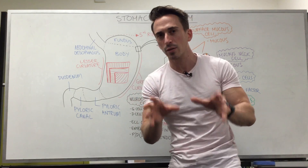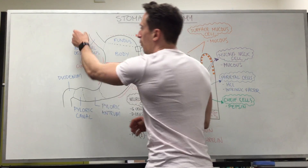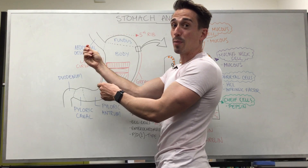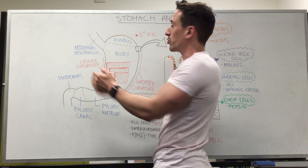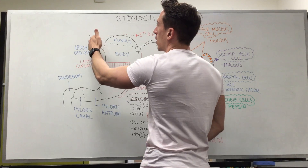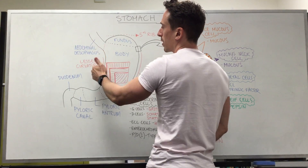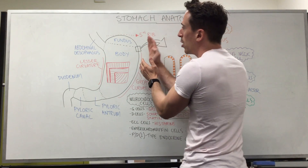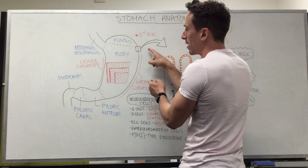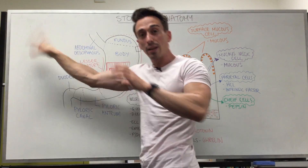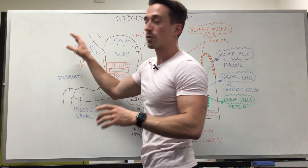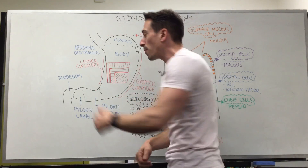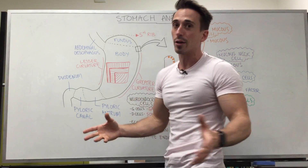Looking at the blood vessels that supply the stomach — the abdominal aorta has a branch called the celiac trunk. The celiac trunk has several branches: the left gastric artery supplies the lowest part of the esophagus and the superior portion of the lesser curvature. The splenic artery branches off behind the stomach, feeding the spleen as well as the fundus and superior portion of the greater curvature. The hepatic artery feeds the liver on that side, supplies the lesser curvature, and has another branch that feeds the inferior portion of the greater curvature.